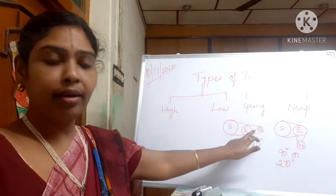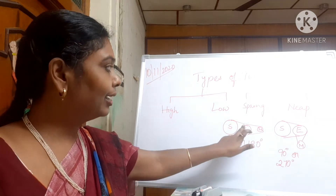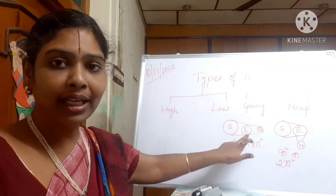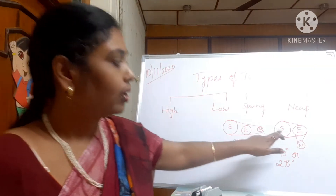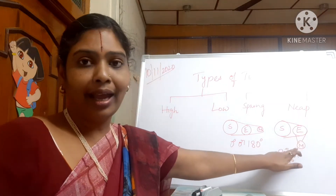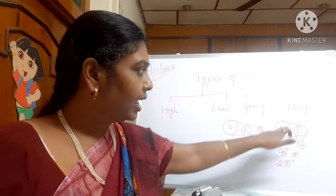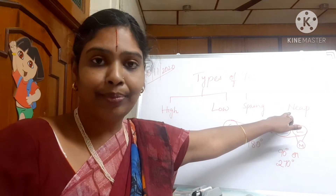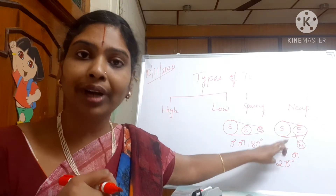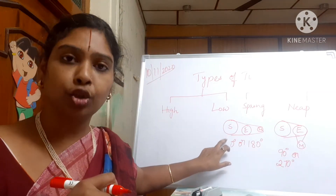When the sun, earth, and moon are in a straight angle — zero degrees or 180 degrees — it is known as a spring tide. Here the gravitational force between these three will be higher. When the sun, earth, and moon are at 90 degrees or 270 degrees, it is known as a neap tide. Neap tides happen in the first or third quarters of the moon, and here the tides are weaker, whereas in spring tides the tides are stronger.